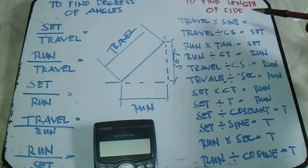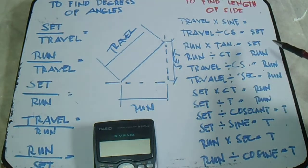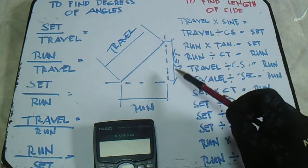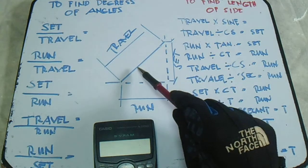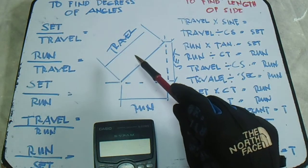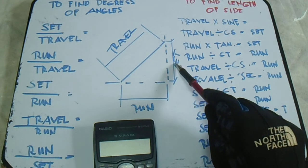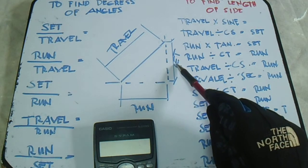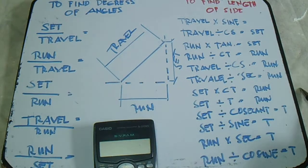This is all formula regarding finding the length of side if one is given. For example, if we have a given travel and a degree, let's say this is 45, we will find the set and run. I will give you an example regarding both formulas.